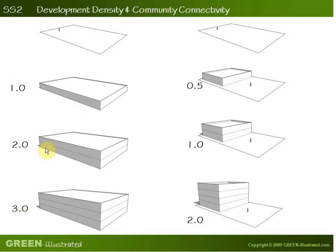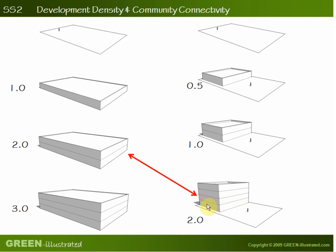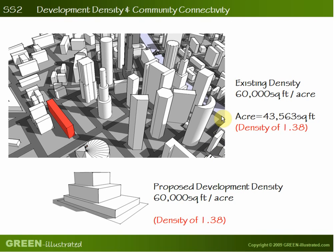If we build two stories over the entire site with no setbacks, the density would be 20,000 over 10,000, so the density is two. Three stories gives a density of three, and so on. Now if we build over only half of the site, one story gives a density of 0.5, two stories over half the site gives a density of one, and four stories gives a density of two. So in these two scenarios we have the same density. Density does not relate to how high the building is or the shape of the building — it is purely how much you are building in proportion to the size of the site. You can have two buildings with very different forms and sizes having the same density.